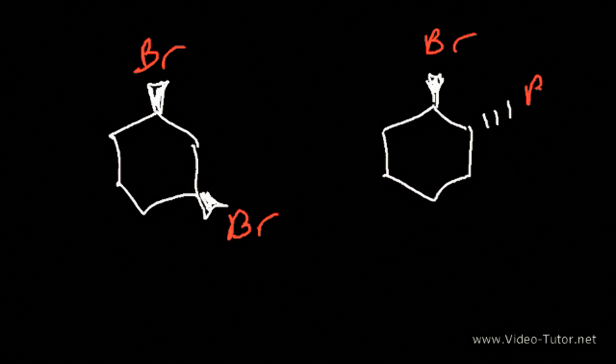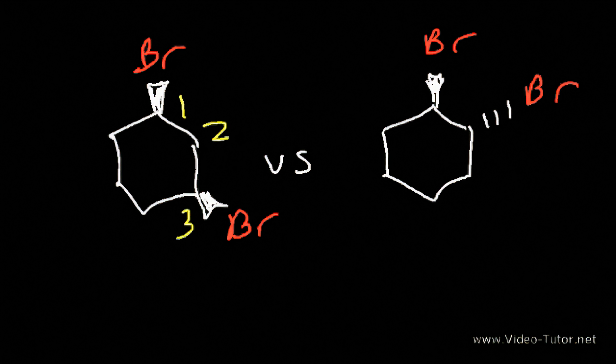What is the relationship between these two molecules? These are not diastereomers. Even though some chiral centers change but not all, notice that the connectivity is different. Here the two bromine atoms are on carbons 1 and 3, while in the molecule on the right side, the two bromine atoms are on carbons 1 and 2. So we have a case of constitutional isomers since they're connected differently.